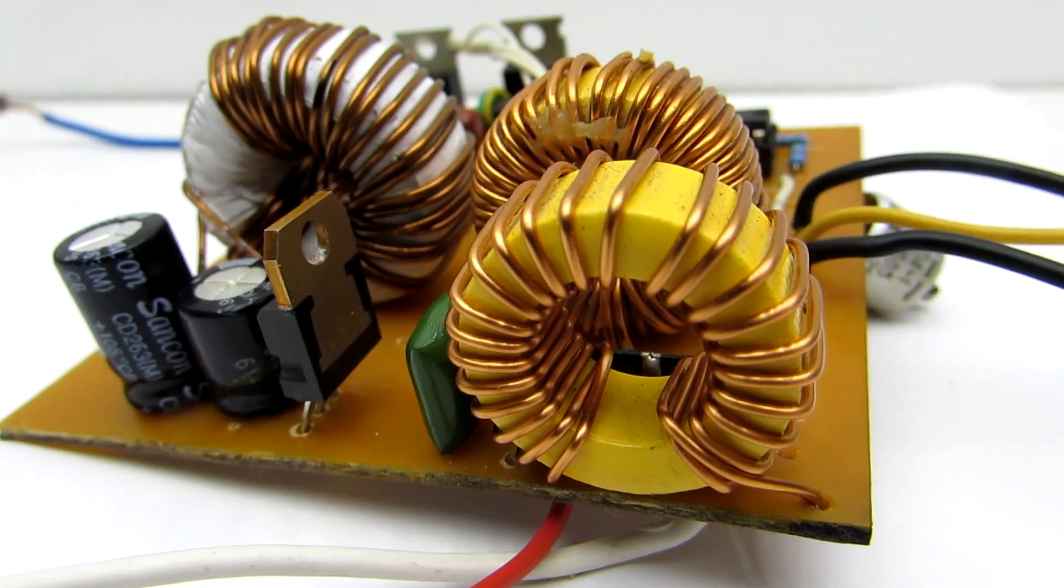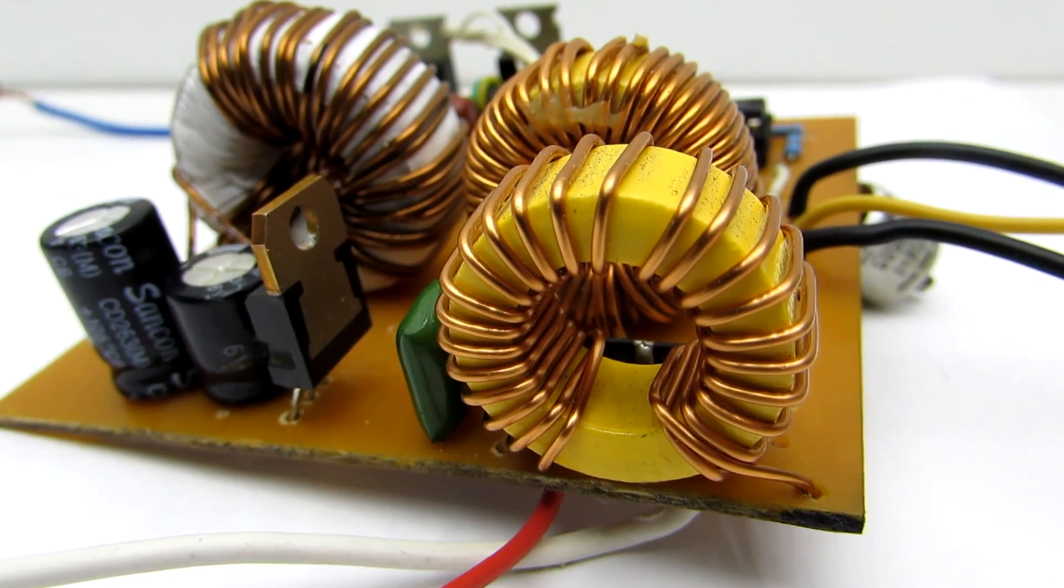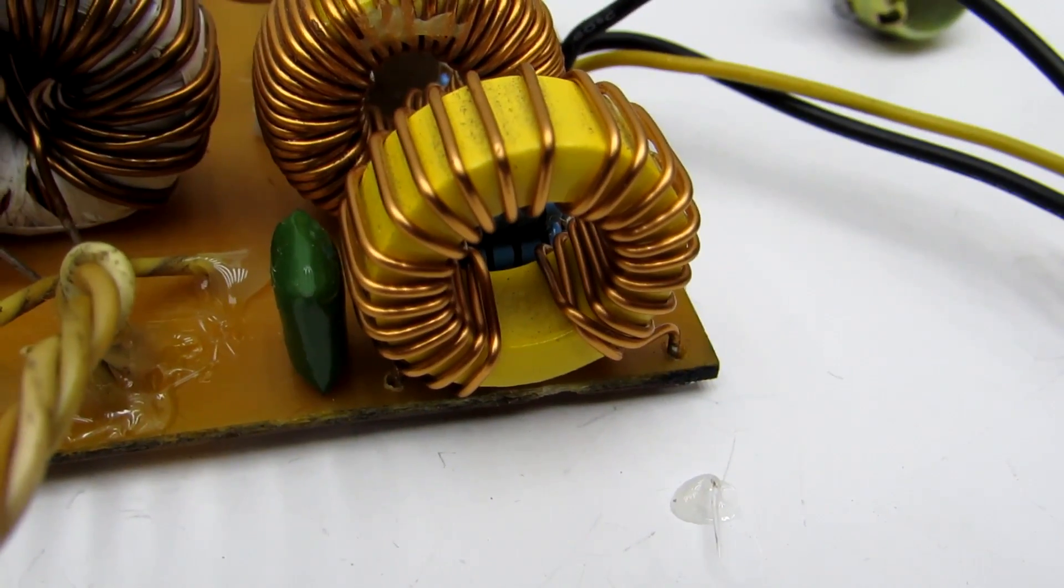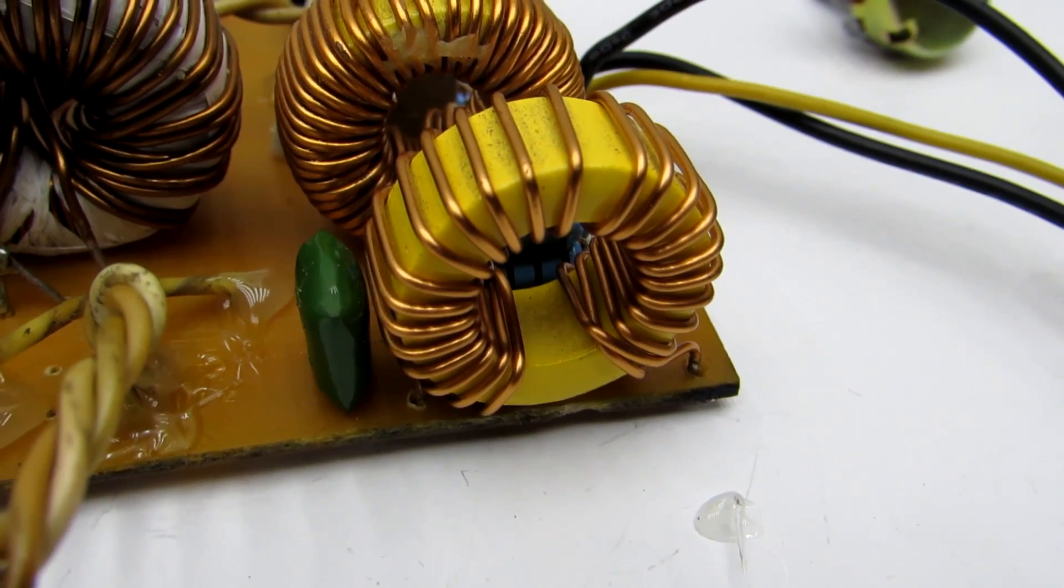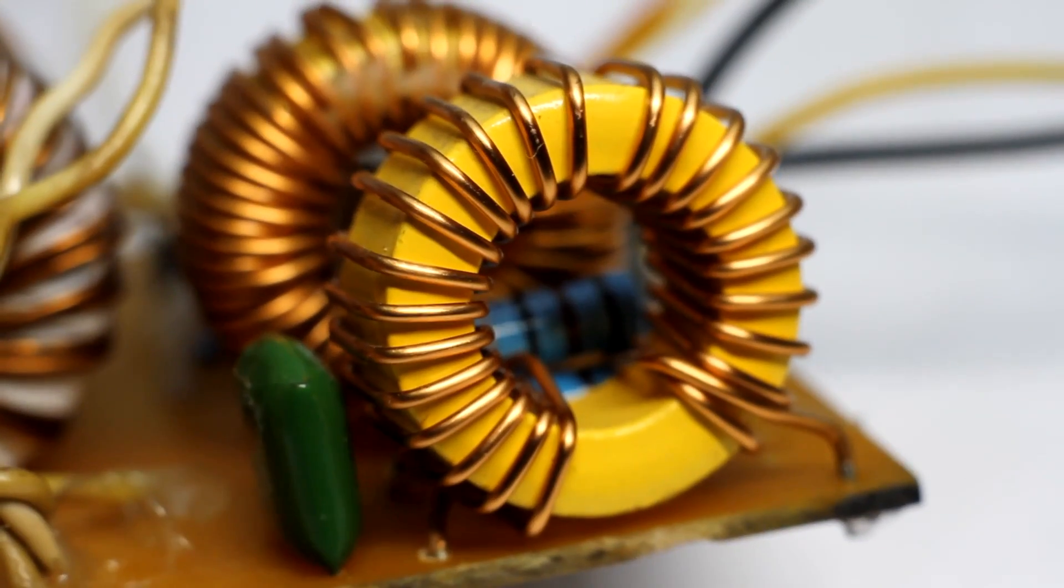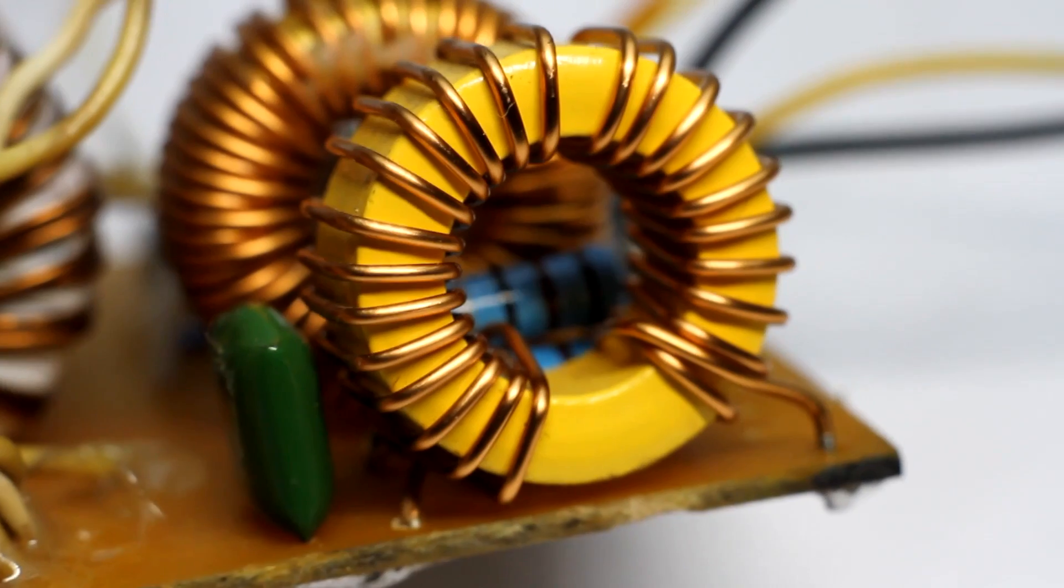But it is mainly to reduce the capacitor charging current during operation. Roughly speaking, it is something like a passive corrector of a power factor. Core I took from computer power supply. It was throttle of group stabilization. New winding has 24 turns of 1 mm wire.